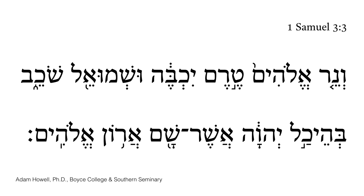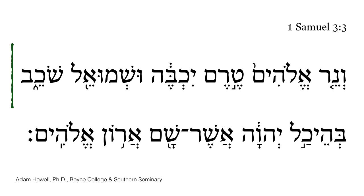Notice first the placement of the ath-nach here. The ath-nach is the heaviest break in the sentence after the silluq and the sof pasuq. For this first half-verse, the ath-nach should not allow us to directly associate things in front of it with things after it — it provides a large break. Therefore, we want to notice a syntactical pause between 'Samuel was lying down' and the prepositional phrase 'in the temple of the Lord,' so we don't have to imply that Samuel was lying down in the Holy of Holies.